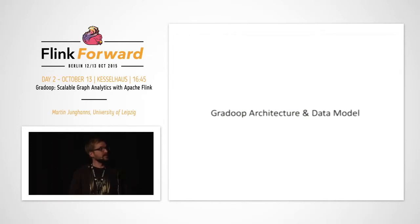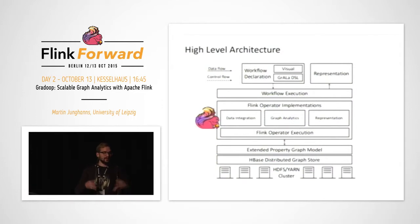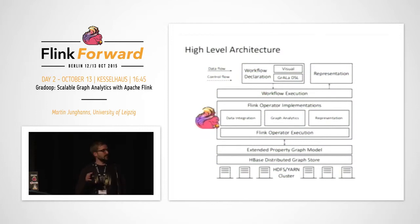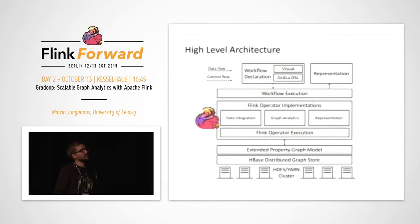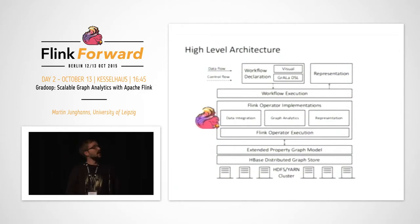Let me introduce the architecture and data model. This is a high-level view of our current architecture. We build on HDFS and YARN. HBase is currently our distributed graph store, where the graph is stored and loaded from. On top of that sits the extended property graph model, and our main component in the middle uses Flink for operator implementation — operators tailored to each of the end-to-end analytics steps: data integration, graph analytics, and representation. On top is workflow declaration, and we are building a draft for a domain-specific language called Krala — a graph analytical language — plus a representation layer with web UIs.